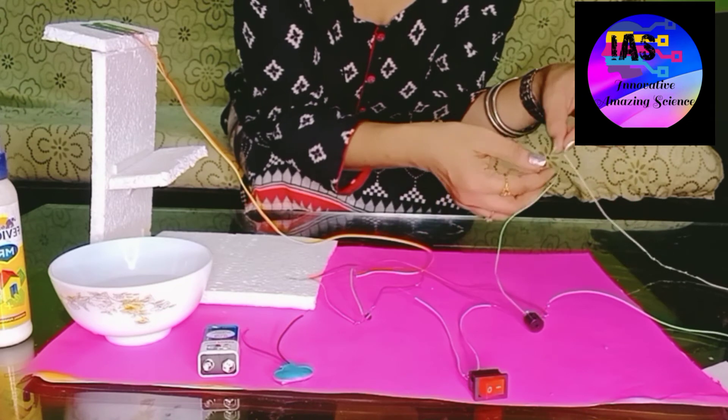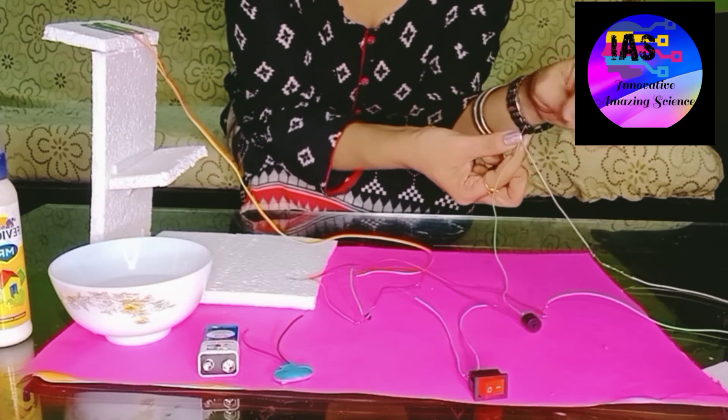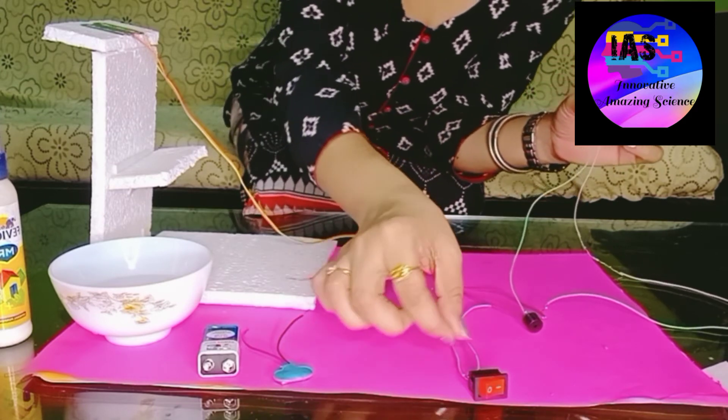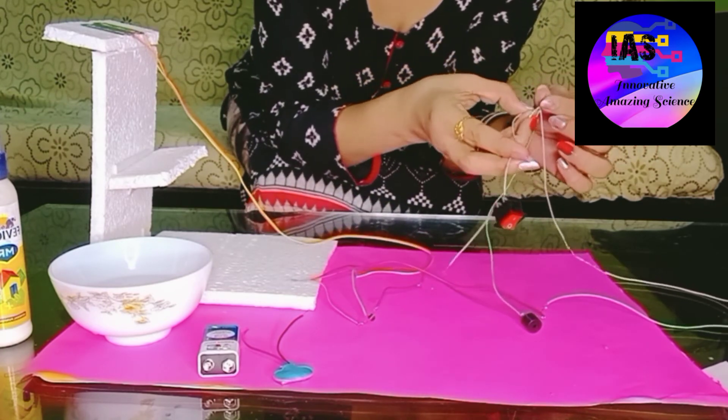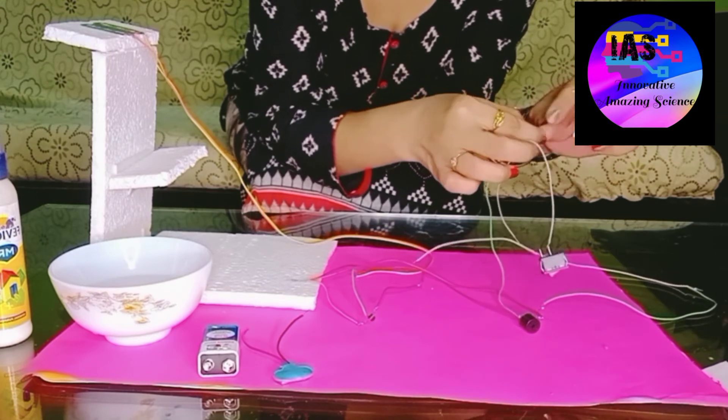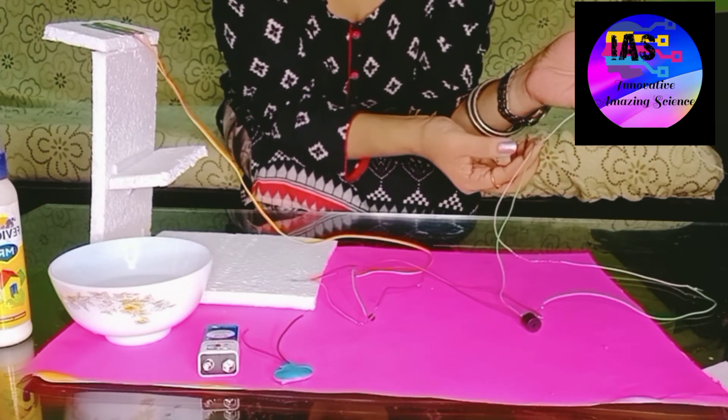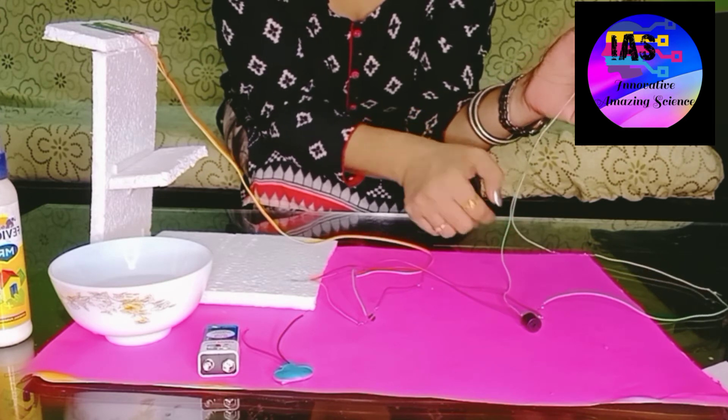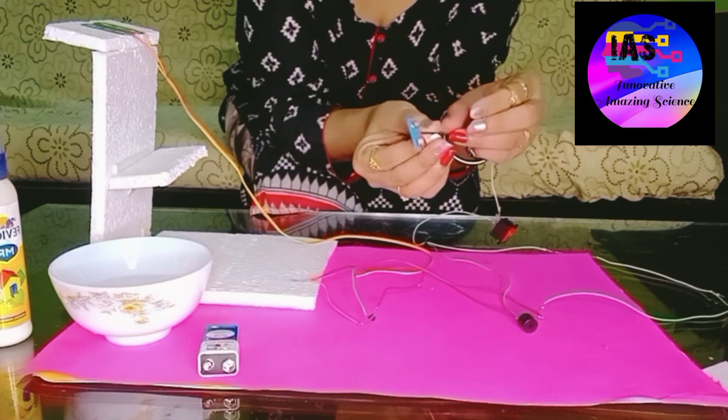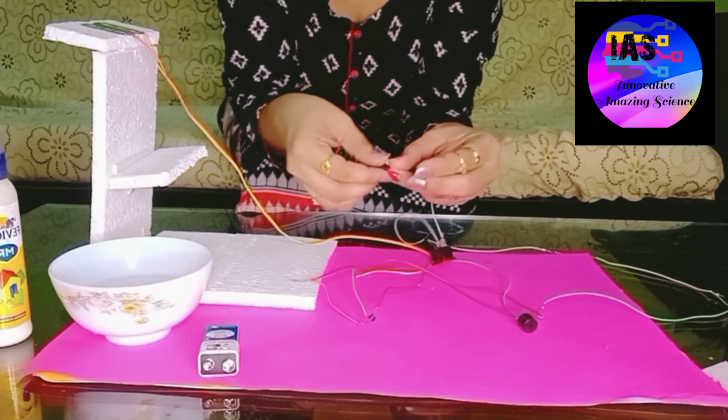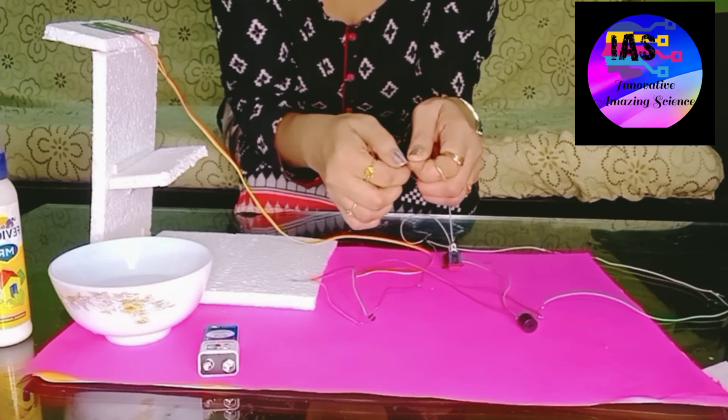Then I'm going to take this end. This is the negative end of the buzzer along with the resistance. I'm going to take this and the on-off switch, and to one end I'm going to fix this and twist it. So I have fixed the on-off switch one end to this negative end of the buzzer and the resistance. And the other end, I'm going to fix it to the negative end of the battery connector, the black one. I'm going to fix it and twist it.